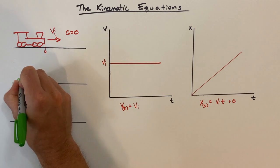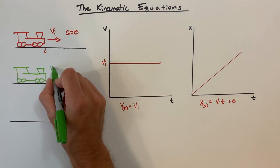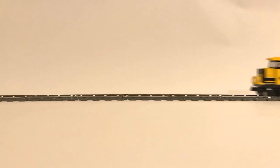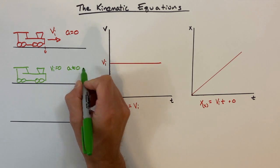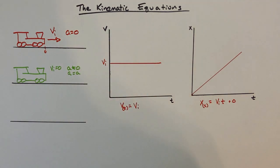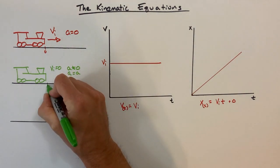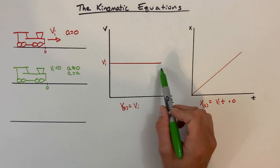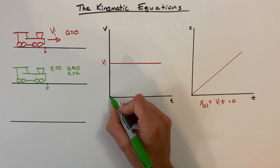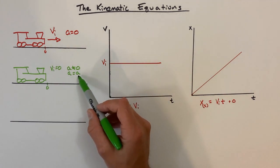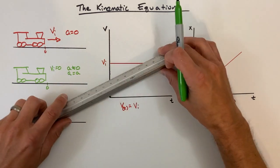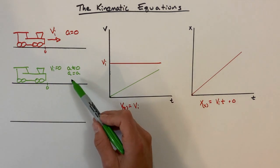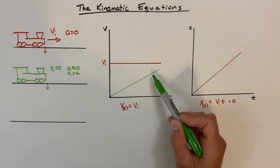Our next train is going to start at rest, but it is going to accelerate at some rate A. The acceleration is given by some value A — it could be any number we choose. Again, we can have this train start at a position of zero. On our velocity versus time graph, it's going to look a little bit different from the last train. Because this train is starting at rest, the initial value is going to be zero. But as time goes on, the train is going to accelerate and speed up. When we say the train is accelerating, we mean the velocity of the train is changing — in this case, it's increasing.